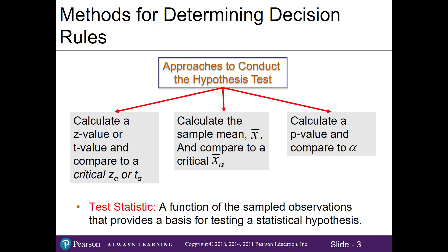In our textbook there are three approaches to conduct a hypothesis test. The first is to calculate a Z or T test statistic and compare it to a critical value or cutoff point. The second is to calculate the sample mean and compare it to a critical mean. The third is to calculate the p-value and compare it to the chosen alpha. We will not cover the second method.